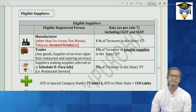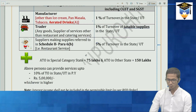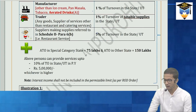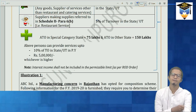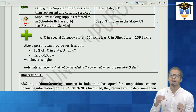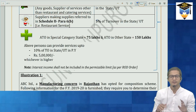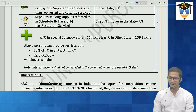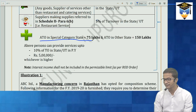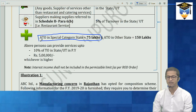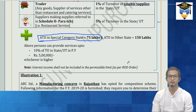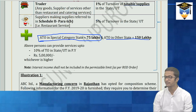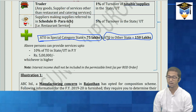Now regarding the turnover limit. The act originally said 50 lakhs, but now by notification the limit has been increased. If you are in a special category state, the limit is 75 lakhs. If you are in other states (other than special category), the limit is 150 lakhs (1.5 crore). So the enhanced limit by notification 14/2017 is what applies.